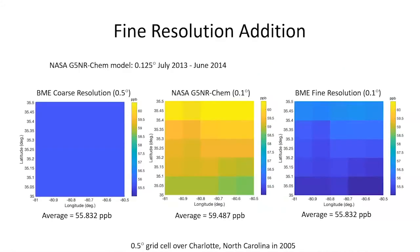After running BME output at 0.5-degree resolution, we added fine resolution using the NASA G5 NR model run at 0.125-degree resolution from July 2013 to June 2014. We re-gridded this to 0.1-degree resolution and used its spatial pattern to inform the spatial pattern of our output. The left map shows the coarse-resolution BME with the same value over the whole 0.5-degree grid cell; the middle shows the NASA model; and the right shows our fine-resolution BME output matching the model's pattern.